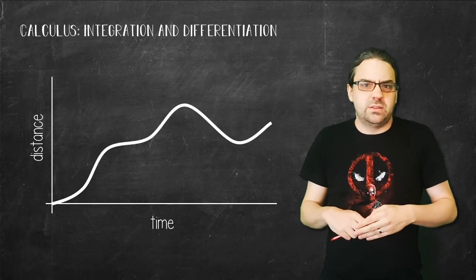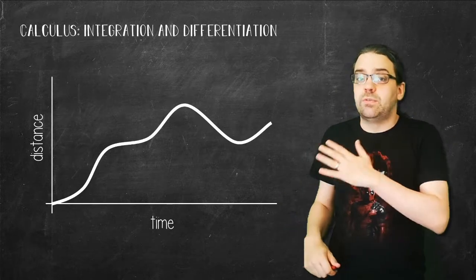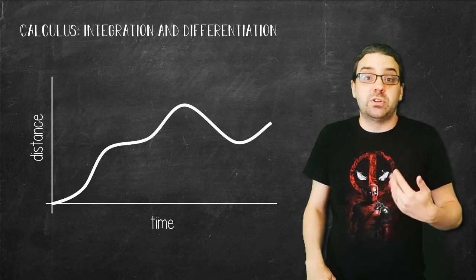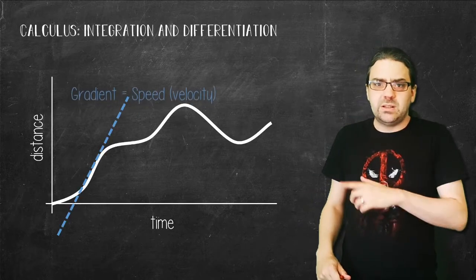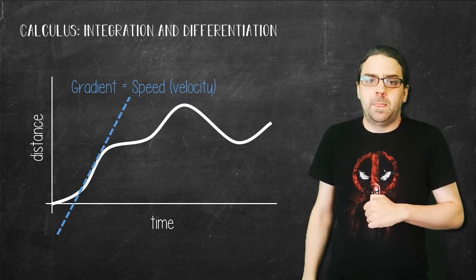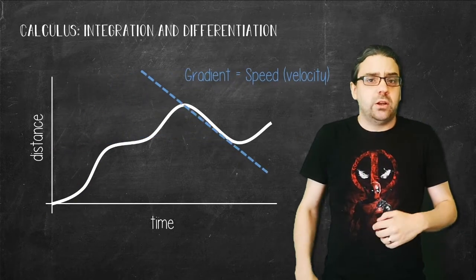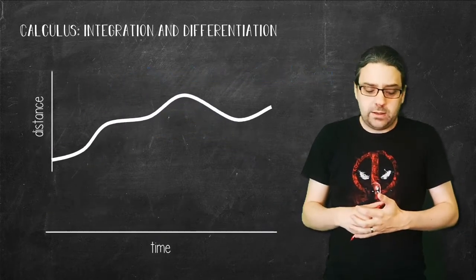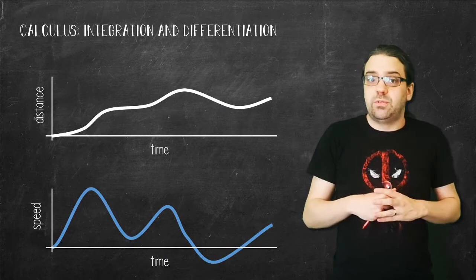An obvious example is speed. Speed is the first derivative of your position with respect to time, or the gradient at any point. And because there is a different speed at each point, that could generate a new graph too, where the y-axis is the gradient of the other.